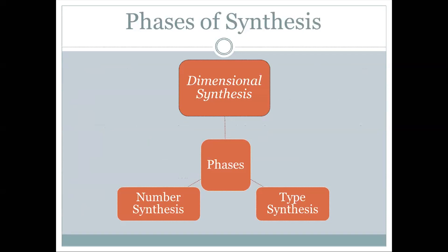There are three phases of synthesis: dimensional synthesis, number synthesis, and type synthesis. The main aim of my project is dimensional synthesis. Type synthesis determines which type of mechanism you want for a given motion — for example, a cam and follower mechanism, a four-bar mechanism, or a slider-crank mechanism. Number synthesis tells you the number of links and joints you want. As far as this project is concerned, we are focusing on dimensional synthesis, where we find the actual length of the links, the position of each link, and the angle between each of the links.